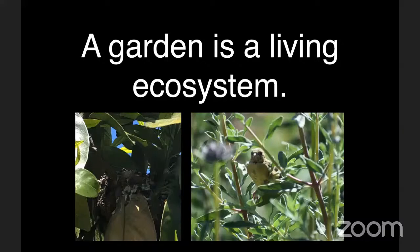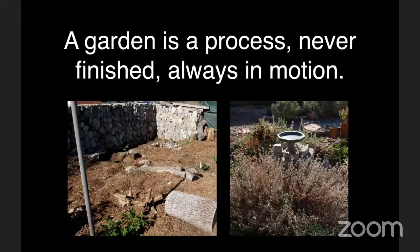With interior design, if you choose the right couch for your space and put it down, as long as your dog or cat doesn't shred it, it's going to be there — things aren't going to change. But a garden is a living ecosystem. Things are going to change, things are going to grow. It's a process. A garden is never finished and always in motion.